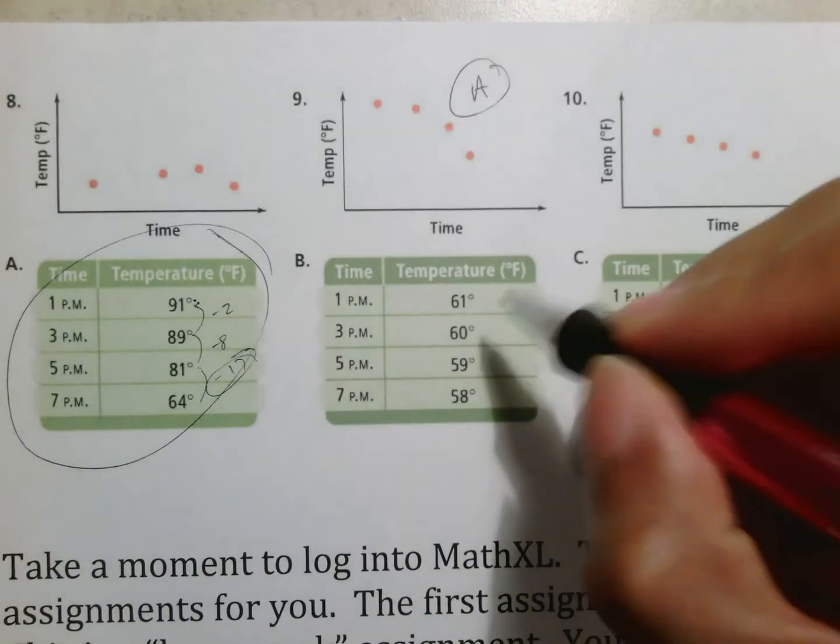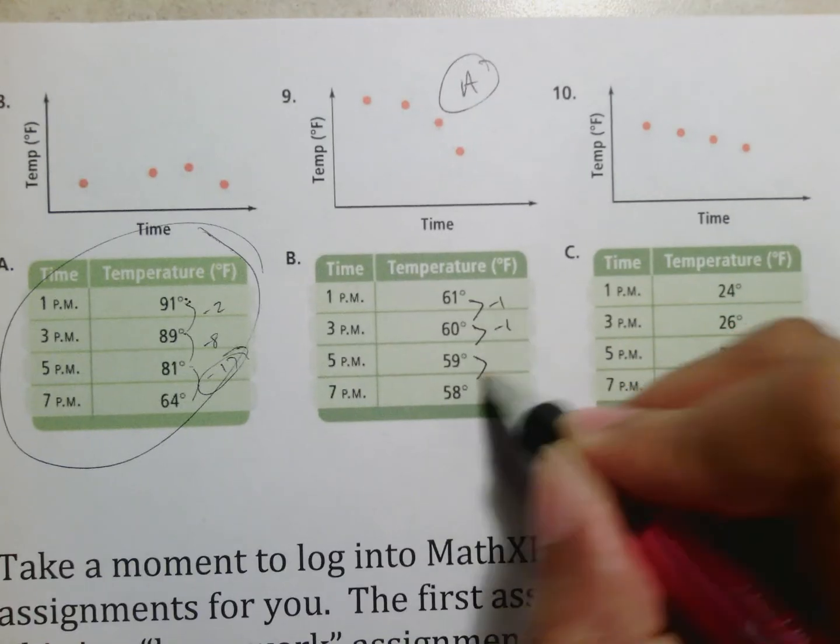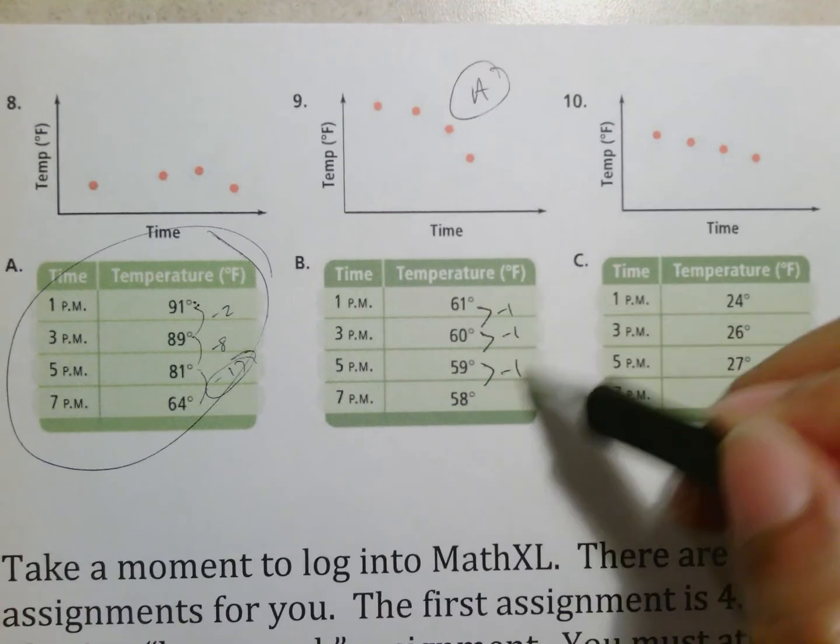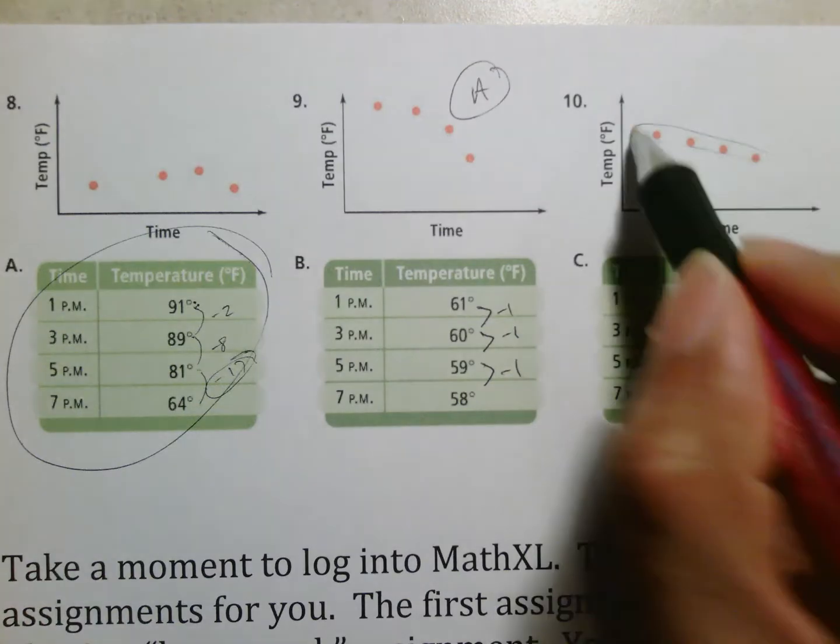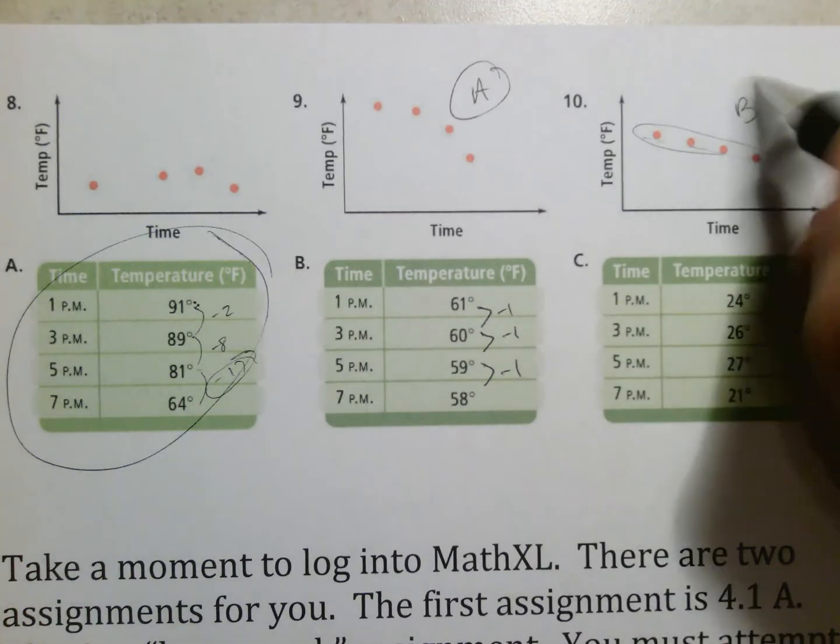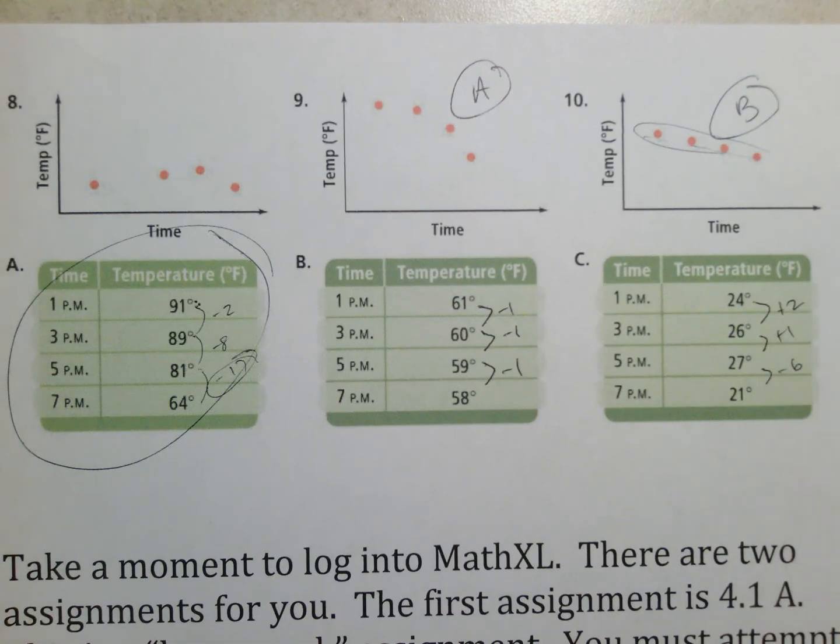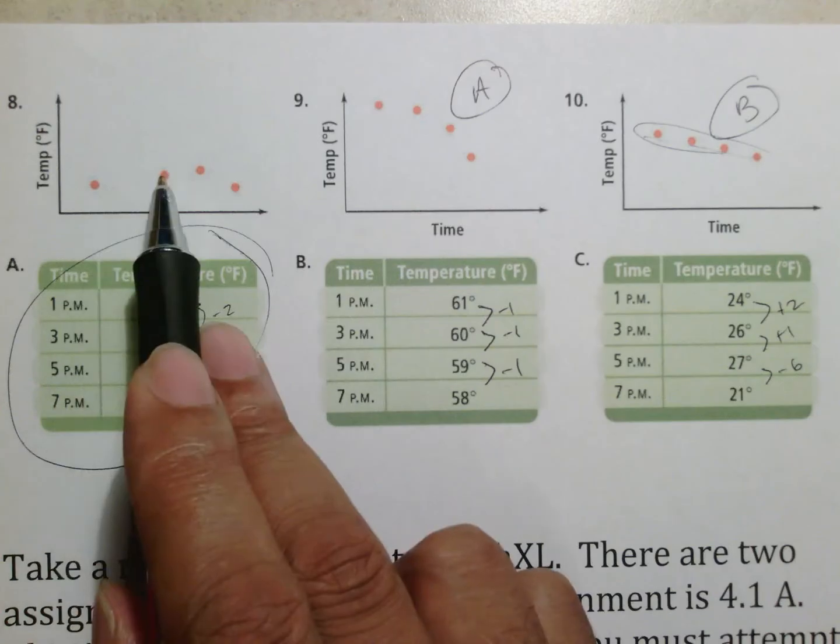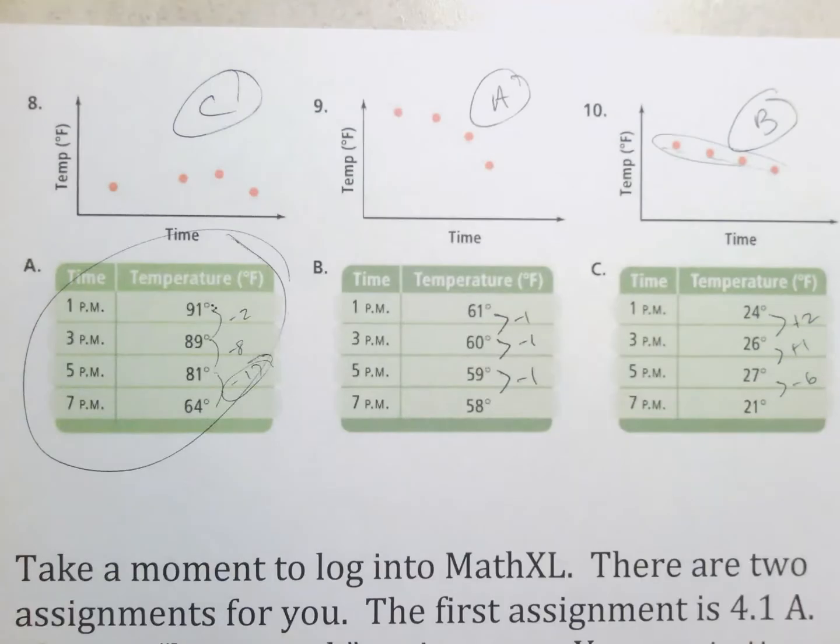Looking at this one, notice it goes 61 to 60, which is minus 1. It goes 60 to 59, which is minus 1. 59 to 58, which is minus 1. And notice that constant change should be more linear. And there you go right there. There's your linear change. This would be graph B. And just to make sure, notice that this goes up 2, up 1, and then down 6. Whereas notice up 2, up 1, down 6. This would be graph C.